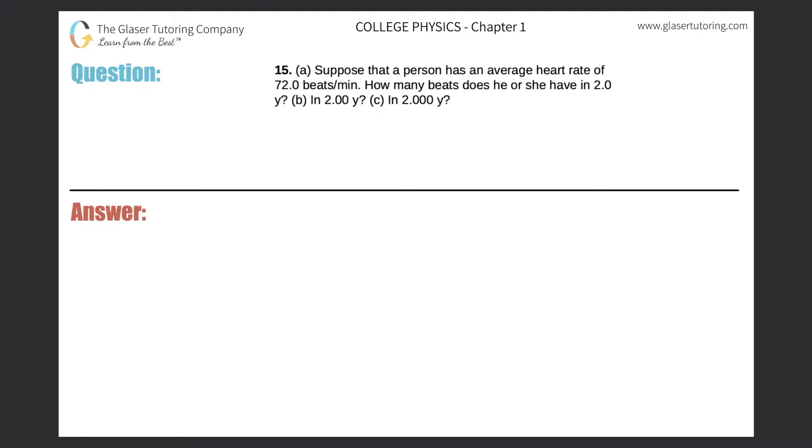Number 15, letter a. Suppose that a person has an average heart rate of 72.0 beats per minute. How many beats does he or she have in 2.0 years? Then b would be 2.00 years, and c would be 2.000 years.